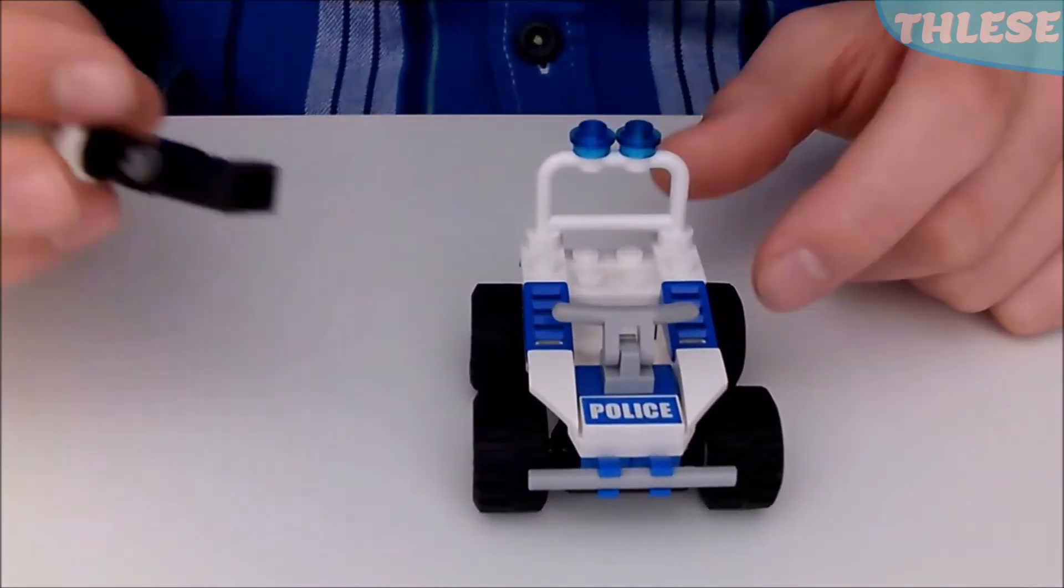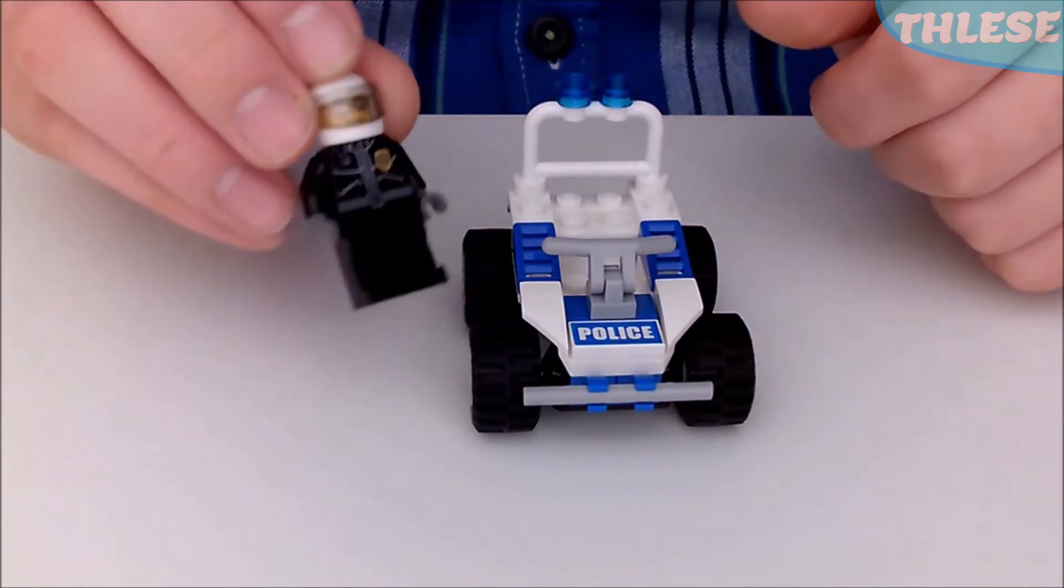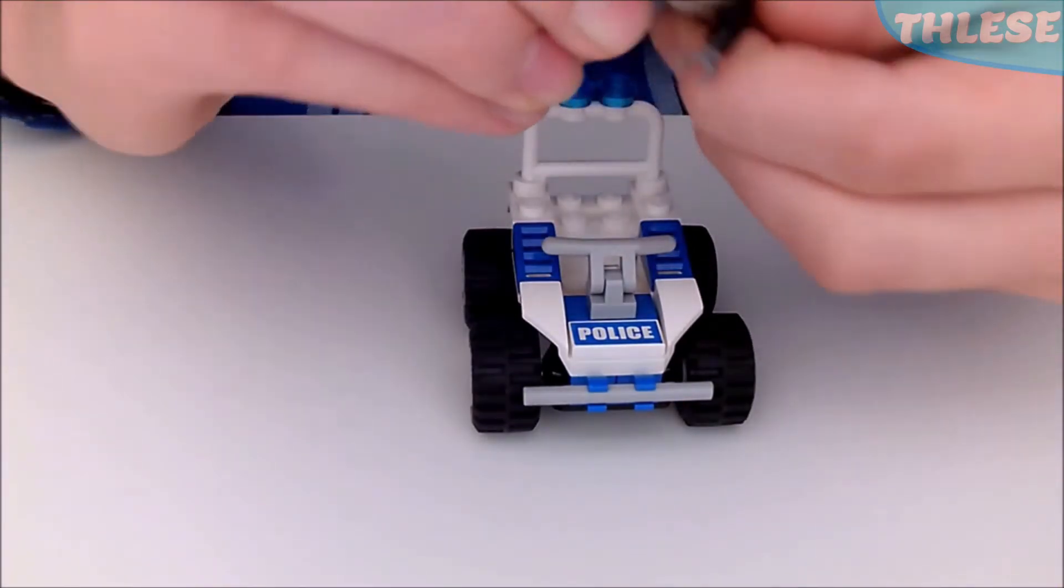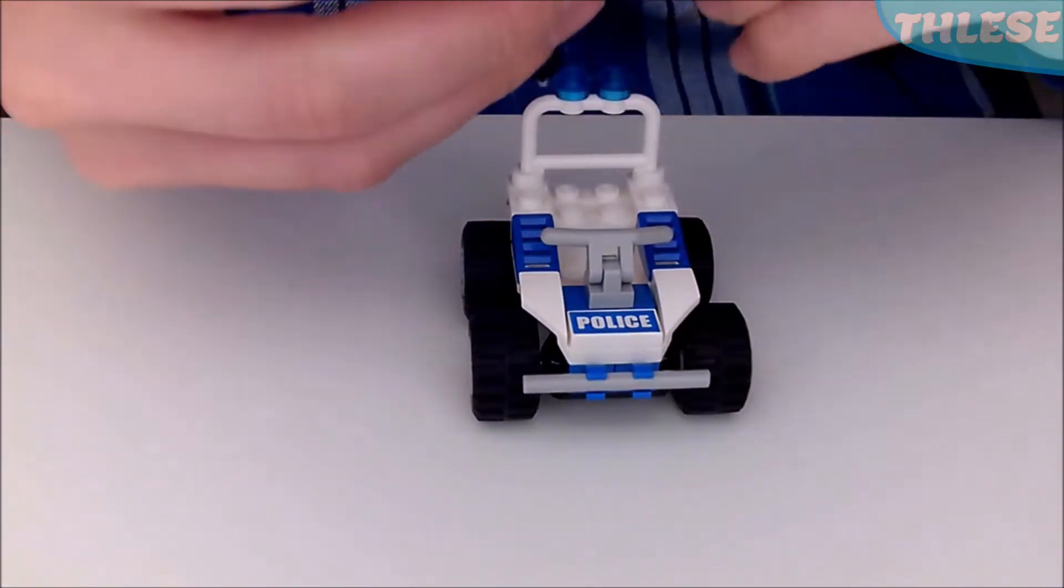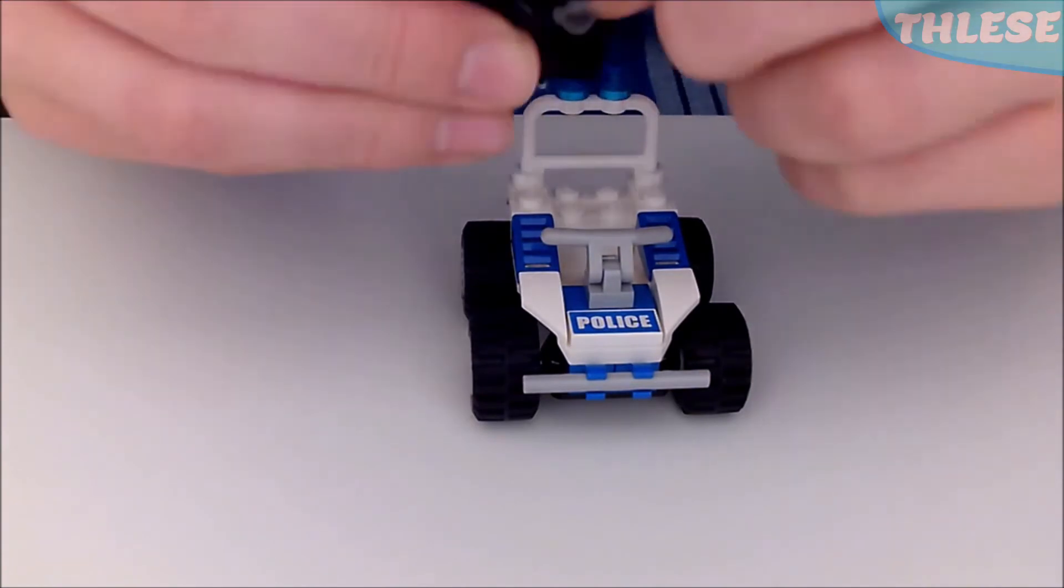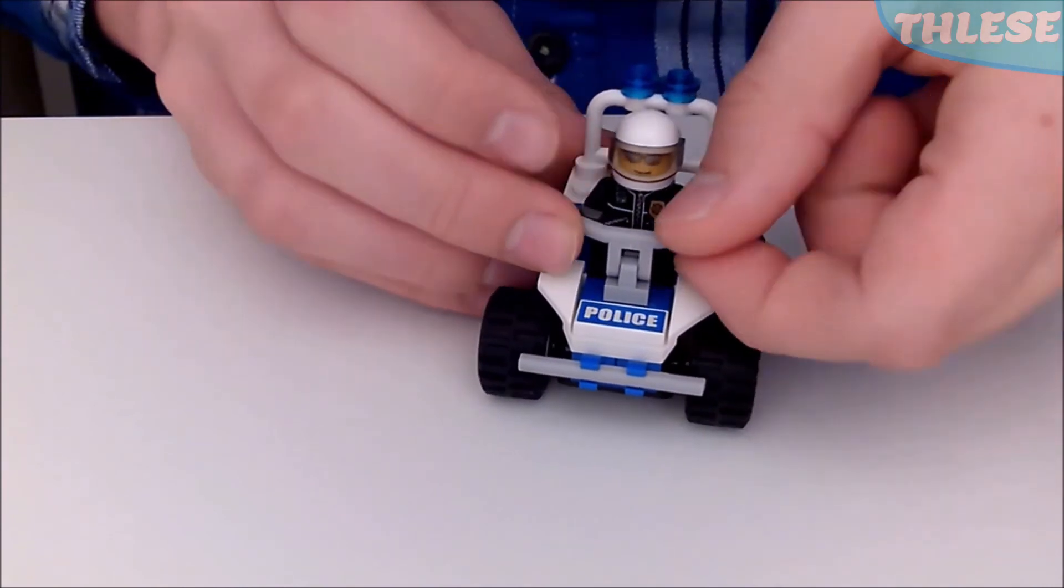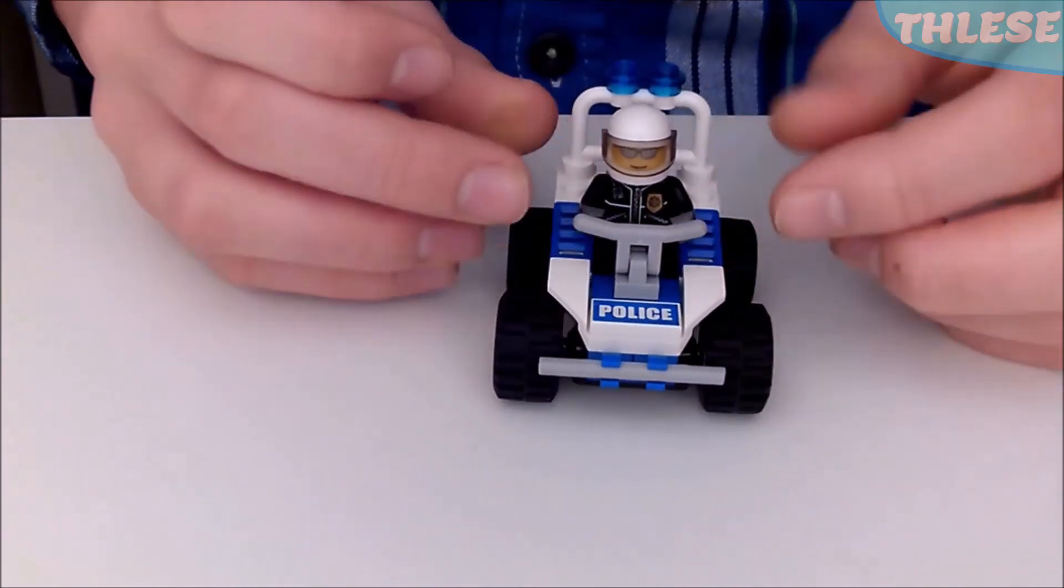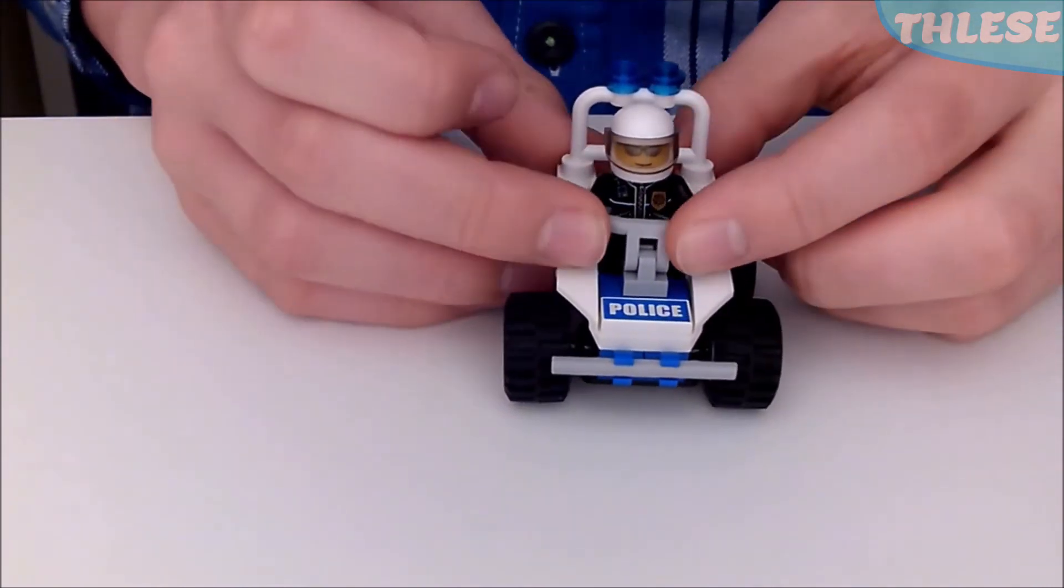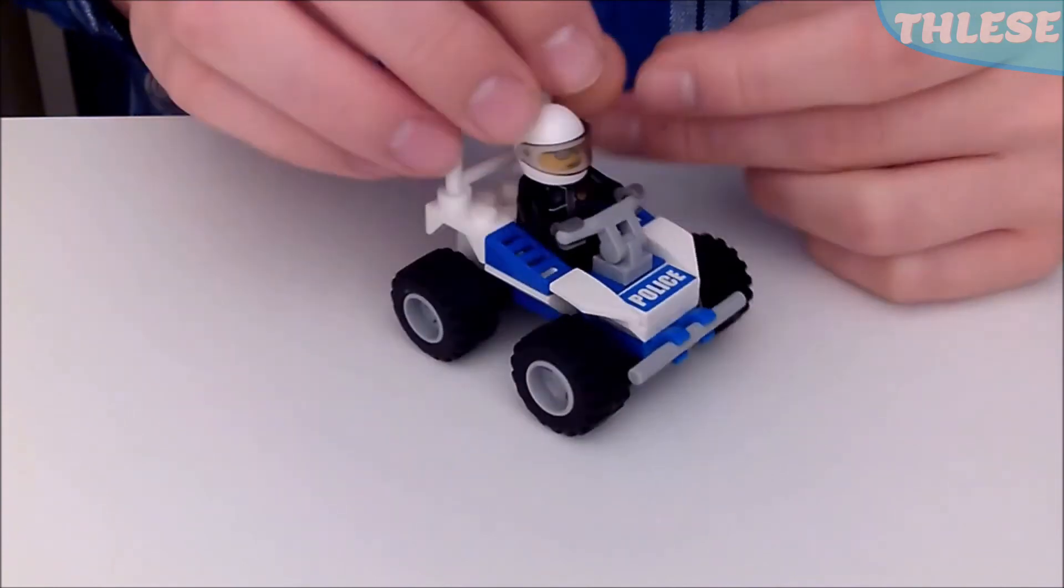And to put a minifigure in, they suggest for you to put this guy in because he obviously has the helmet. You cannot go anywhere on a quad bike without a helmet, unless you want to be like... I don't know, a guy without a helmet. So you just turn his arms like so and then just click his arms in. And now he can drive around wherever he likes.